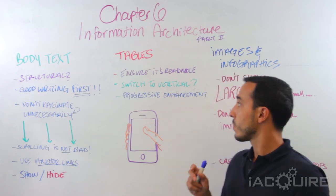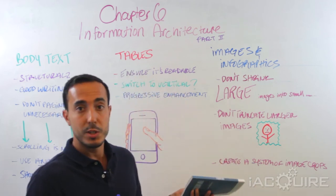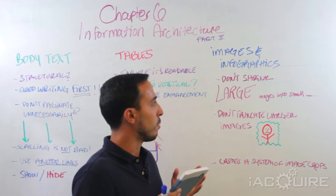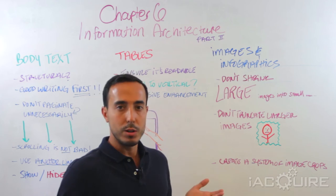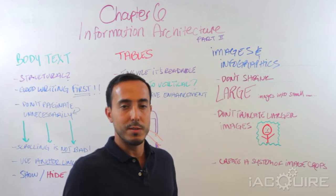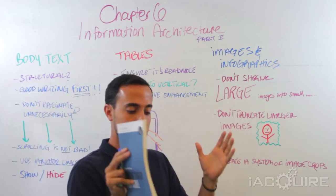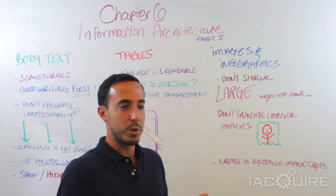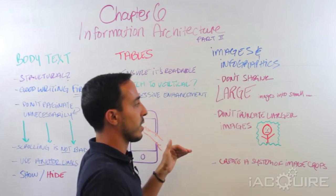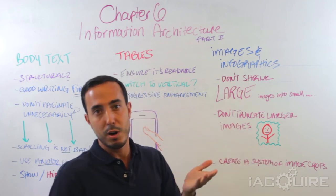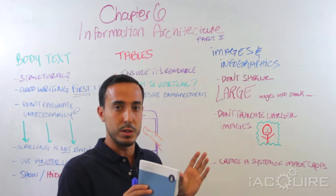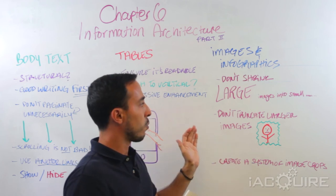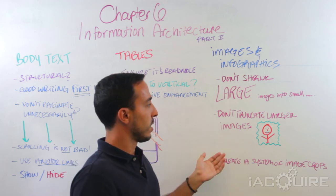The last part covers images and infographics. This might seem pretty straightforward, but it makes a lot of sense when you think about it. Don't shrink large images into really small ones — they look bad and you can't even tell what's in the image. You're better off cropping the image instead. There's a difference between truncating images — just chopping them to fit the dimensions you need — and cropping, which is a combination of both resizing and chopping according to certain dimensions.